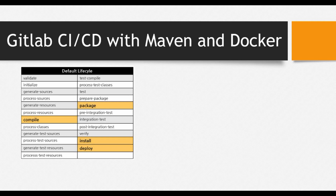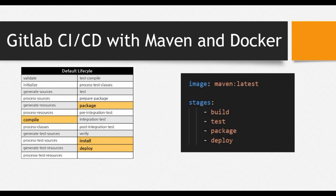What we will do is use a Maven Docker image and create four stages: one for build, one for test, one for package, and one for deploy. We'll see how we can run those pipelines so that Maven can build the project and the whole artifact is created.